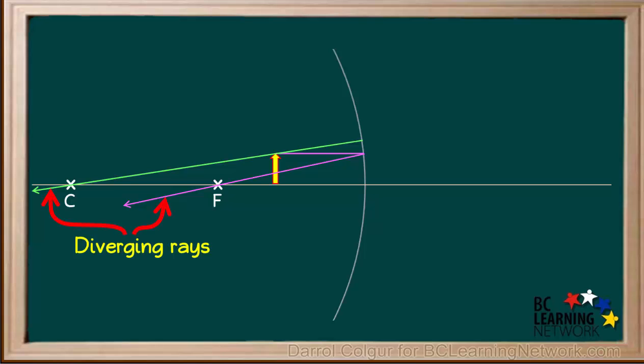Notice that the purple and green rays are diverging rays. They are moving apart from each other, so they will not cross in front of the mirror to form a real image.